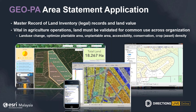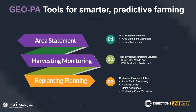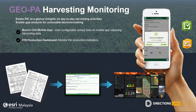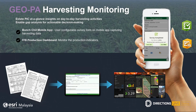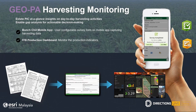Apart from the area statement solution, we have also presented the second application: the FAP harvesting monitoring solution. This solution records harvesting data down to block and plot basis, enabling gap analysis for actionable decision making. The harvesting monitoring solution comprises two parts. The first is a Bunchik mobile app using the configurable form-centric mobile app leveraging ArcGIS Survey123, creating, capturing and analyzing FAP harvesting data — with GPS location, site photo, and harvesting times uploaded to a central system. Data is then consolidated and shown in the FAP production dashboard, which is the second part, to monitor production indicators.